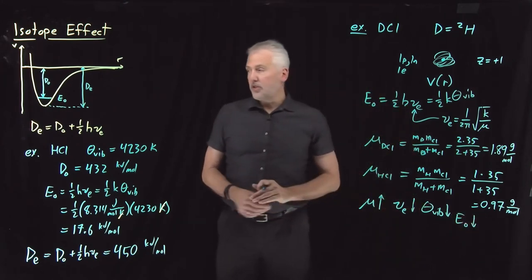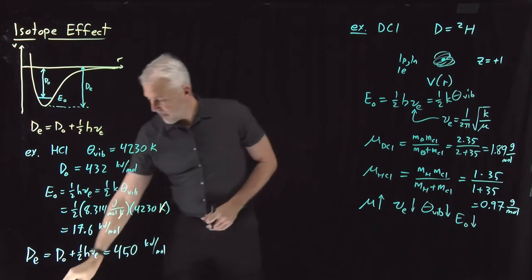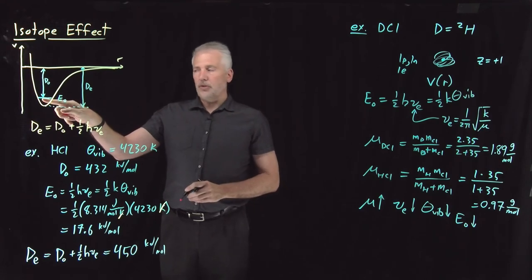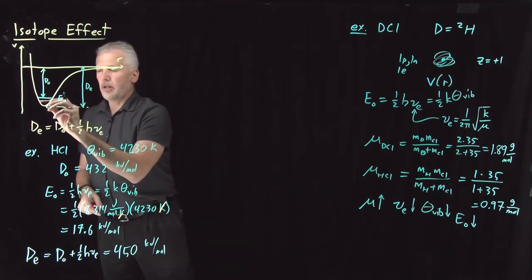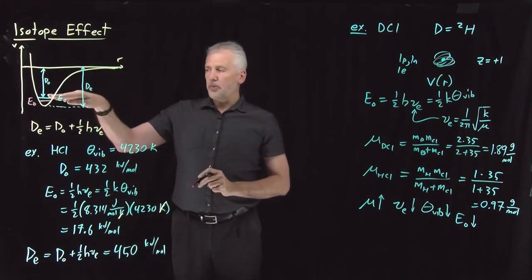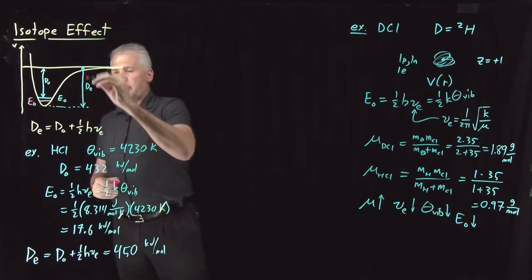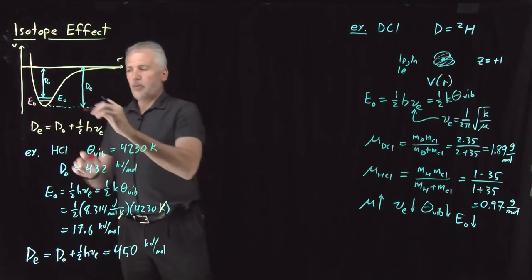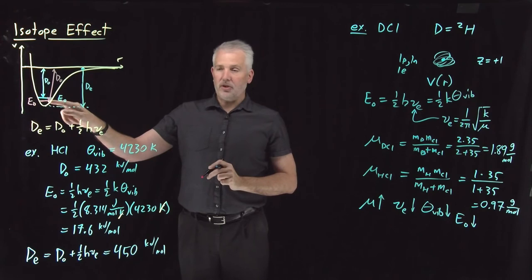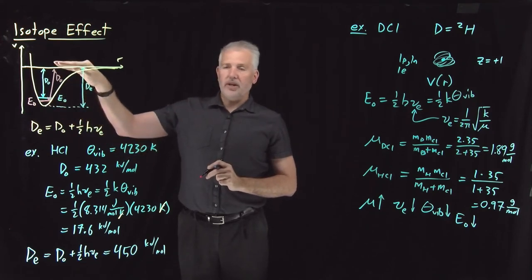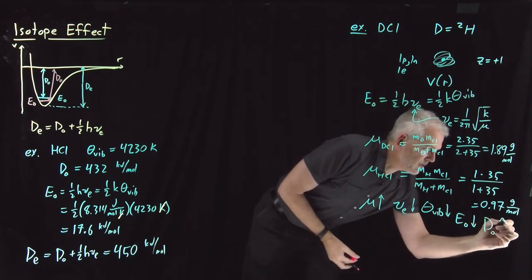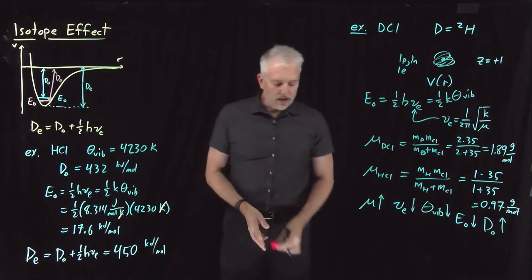The important consequence: when the zero point energy drops — if the zero point energy shown here is for the HCl molecule, in DCl the zero point energy will be lower. So if I've modified the isotopes in a way that lowered the zero point energy, even though I haven't changed the dissociation energy from the bottom of the well, the dissociation energy from the zero point energy in the heavier isotope starts from a lower point, so it takes more energy to get up to the dissociation limit — the dissociation energy of the molecule goes up when measured from the ground state.